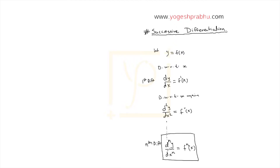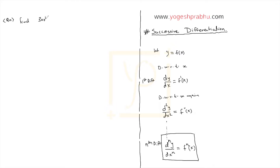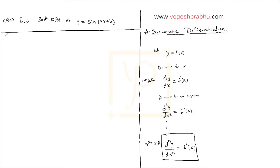In successive differentiation, you differentiate a function multiple times. You can get a question asking you to find, say, the 300th differentiation. How do we do this? That is what successive differentiation is about. To make this clearer, let's take a sample problem: find the 300th differentiation of y equals sine of ax plus b.